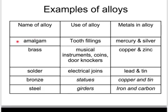You need to know that amalgam, which is an alloy of mercury and silver, is used in tooth fillings. Brass, which is an alloy of copper and zinc, is used for example for musical instruments, coins, or door knockers. Solder, which is an alloy of lead and tin, is used in electrical joints to join components onto electrical circuit boards. Two other alloys you need to be aware of are bronze and steel, although you don't necessarily need to know the uses of these or the metals in them.